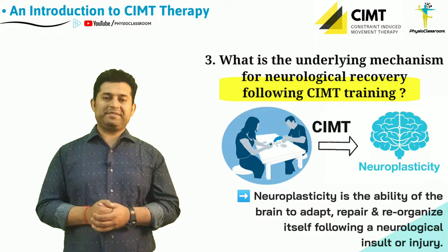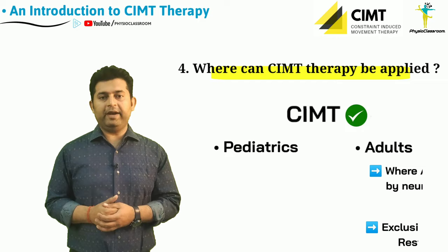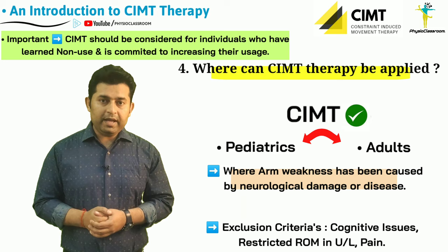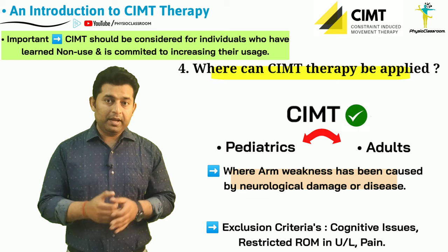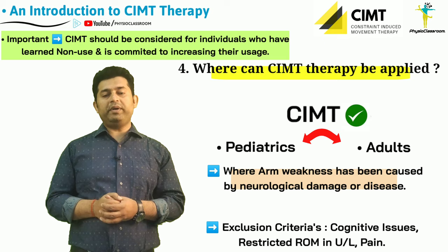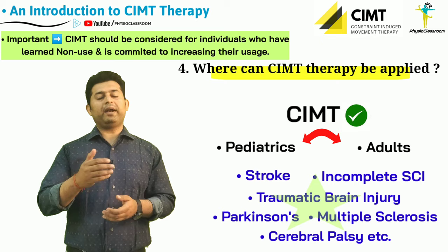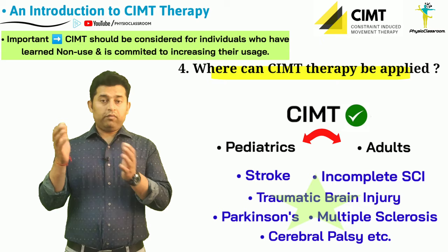Regarding what conditions CIMT training can be applied in and what type of patients can benefit: researchers have shown CIMT therapy to be equally effective for both the pediatric and adult age populations. Main conditions in which CIMT training programs have shown significant improvements in the functional usage of the paretic upper limb include stroke, incomplete spinal cord injury, traumatic brain injury, Parkinson's disease, multiple sclerosis, cerebral palsy, and others.